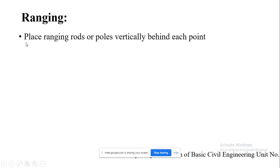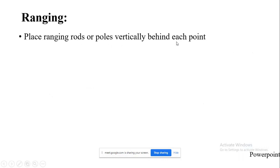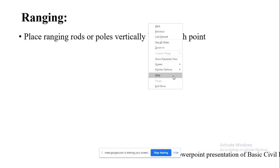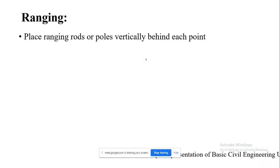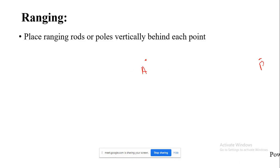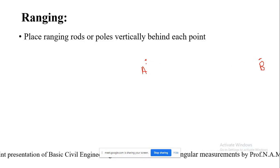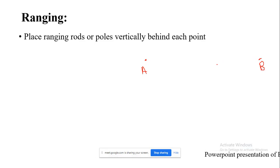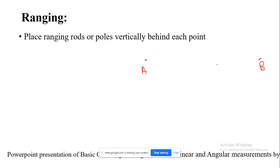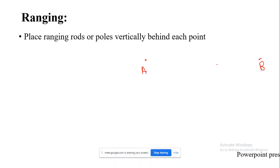Next is ranging. Ranging means placing the ranging rods or poles at intermediate points. For example, if AB is the line to be ranged and the distance is more than 50 or 100 meters, and the length of the chain or tape is restricted, you need to perform the ranging operation.